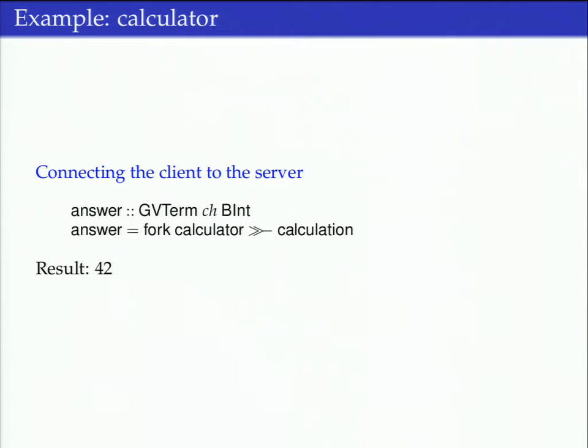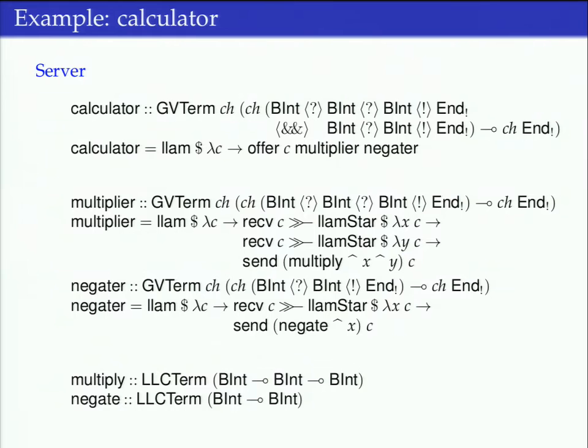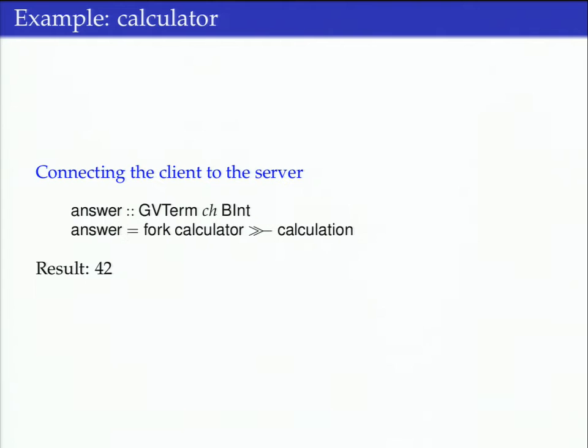The remaining thing you need to plug these things together is this fork operator. It takes a computation, such as this calculator one, that is going to take a channel as input and return a completely empty channel, the CH of end-bang. Then it returns the other end of the channel, which is exactly what the calculation was expecting. The idea is if we plugged that particular example together, that would represent computing 42 in the end.